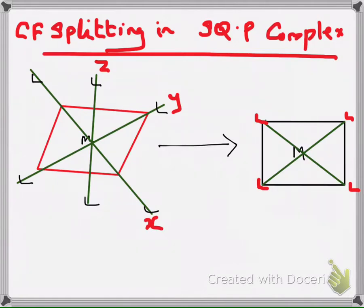In octahedral complexes, the metal ion is surrounded by 6 ligands — 2 ligands through each axis: 2 through the x-axis, 2 through the y-axis, and 2 through the z-axis. In a square planar complex, we have only 4 ligands. So we want to remove 2 ligands from the octahedral complex, then 6 can be changed to 4.